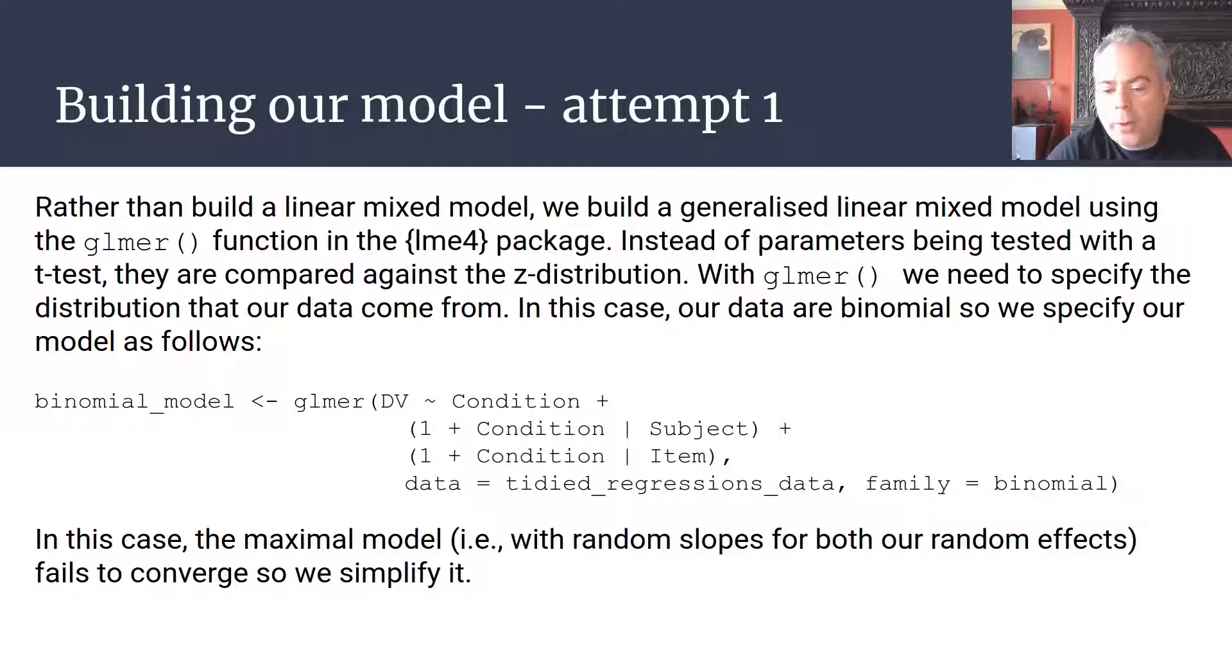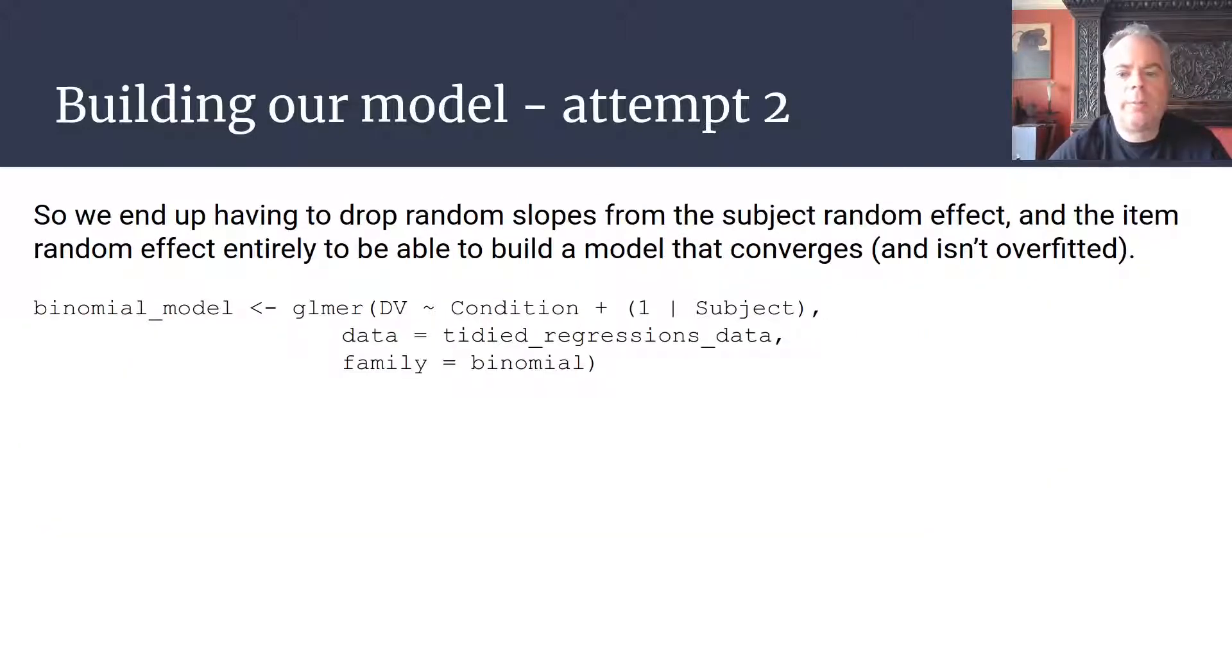This indicates that the number of parameters we're trying to estimate in our model can't be done on the basis of the richness—or lack of richness—in the data set that we actually have. We need to simplify the random effect structure. This is one of those cases where we have to simplify the random effects structure to a huge extent in order to be able to find a model that fits our data. We end up dropping our items random effects term entirely.